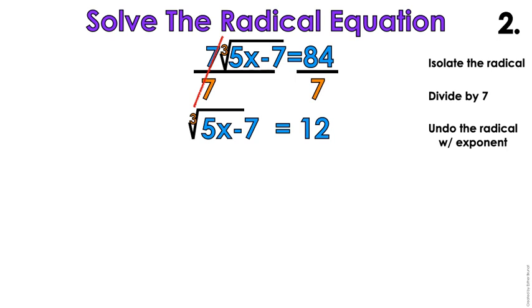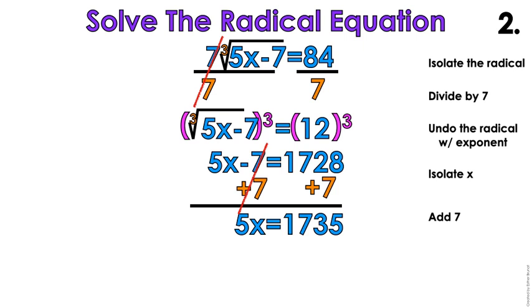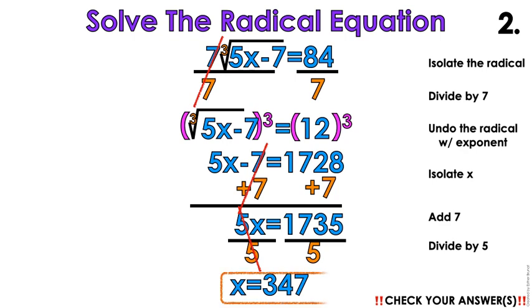So getting rid of that 7, I'm gonna have the cube root of 5x minus 7 equals 12. The inverse of a cube root is cubing, so an exponent of 3. So to get rid of that cube root, I want an exponent of 3. So we gotta cube both sides. When I cube both sides, I get rid of the radical, which is what I want. 5x minus 7 equals, since I cubed 12, that's 1728. Now it's a regular equation. So I'm going to isolate x. Add 7 on both sides. 5x equals 1735. Get rid of the 5. You guys know how to do this part already. So x equals 347. Make sure you check your answers. That's example 2 out of 8.